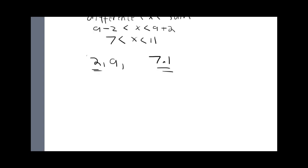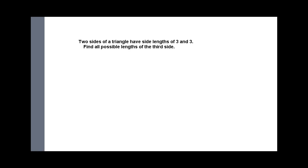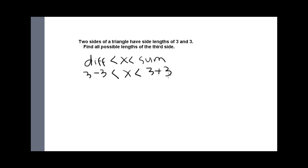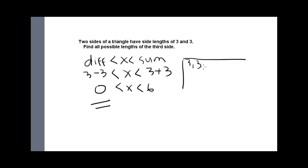Let's look at one last example. Two sides of a triangle are both 3 — find all possible lengths of the third side. We do our normal thing: difference less than x less than the sum. So 3 minus 3 is less than x is less than 3 plus 3, or 0 less than x less than 6. It's okay to have 0 here — we're not saying a side has to be 0, we're saying it has to be bigger than 0. So for a triangle with sides 3, 3, and x, a value like 0.1 works fine because 3 plus 0.1 is bigger than 3.